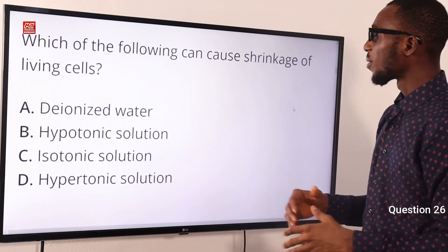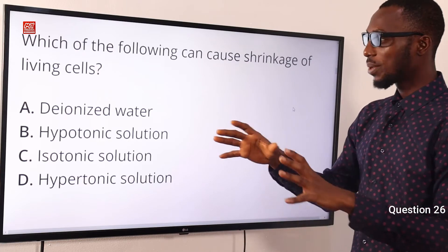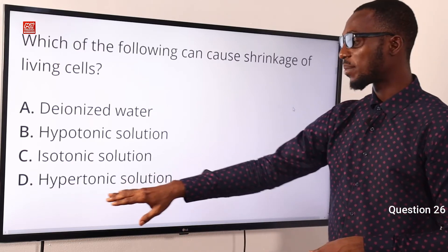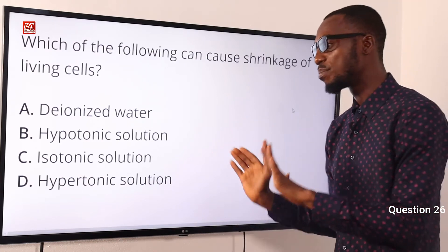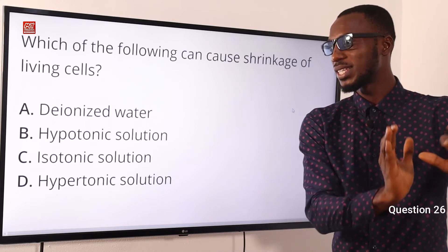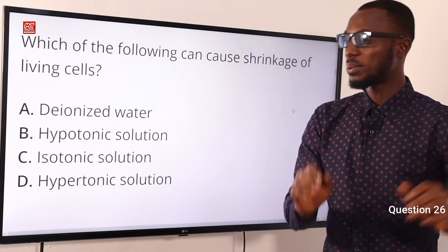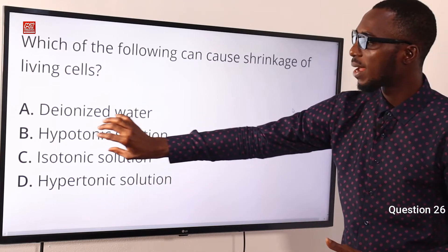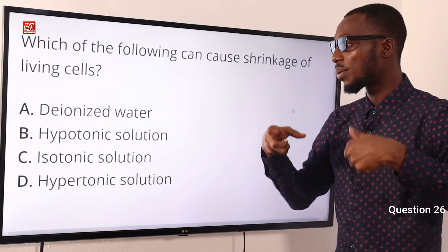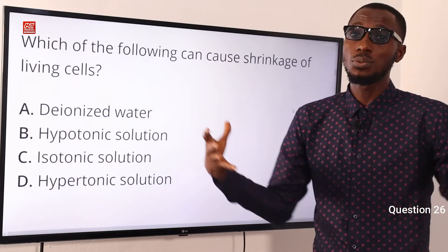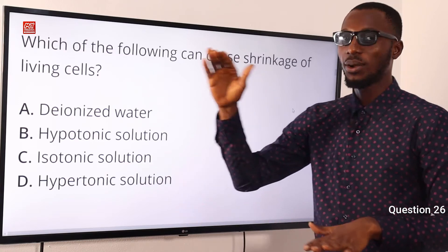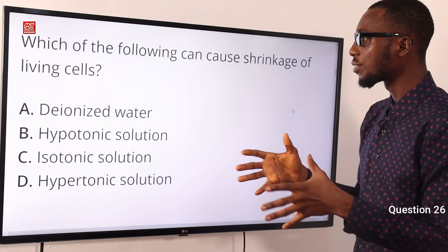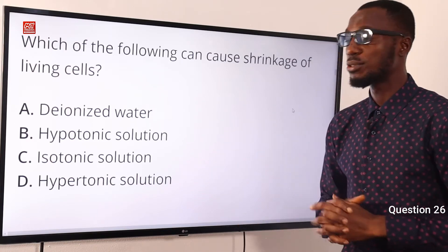Number 26. Which of the following can cause shrinkage of living cells? Shrinkage can be caused when the cell is placed in a hypertonic solution — the concentration of the solution is greater than what you have in the cell, so there is movement of water out of the cell, which you can refer to as exosmosis. When placed in a hypotonic solution, the cell absorbs water from the surroundings and swells, then bursts. In an isotonic solution the concentration is the same so there is no movement of water. The correct option is option D — shrinkage occurs when placed in a hypertonic solution.